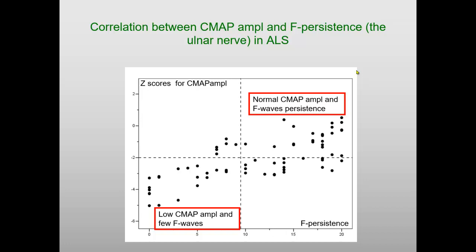One thing we should think of is when we judge persistence: if the amplitude is low because of loss of neurons, then we expect to find fewer F-responses. Here we have the amplitude of the CMAP in number of standard deviations from normal, where lower normal is two standard deviations. If we have good amplitudes, then we have normal persistence. But when the amplitude goes down and is abnormally low, then we also have correspondingly lower F-persistence.